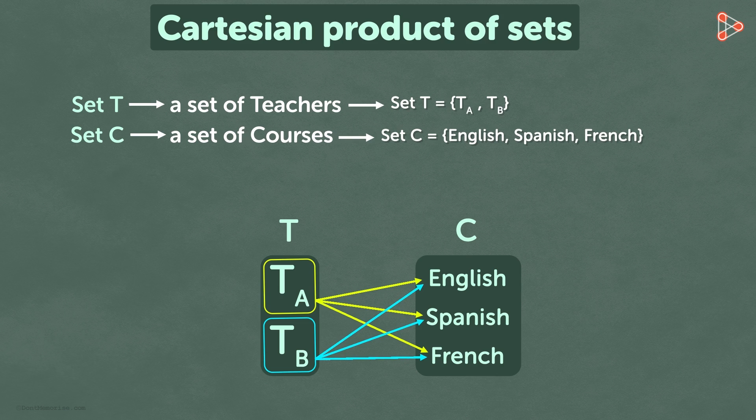In short, we use arrows to map every element in set T to every element in set C. Therefore, an arrow is drawn from every teacher to every course.